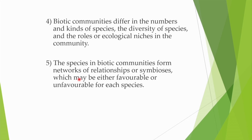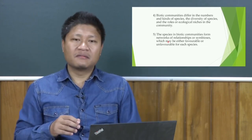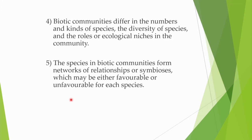In the fourth point, these biotic communities differ in numbers and kinds of species, the diversities of species, and the roles of ecological needs in the community. The geographical locations or habitations or environment thus have some kind of influence on the species — that is, the particular ecological needs where the biotic inhabits. In the fifth point, species in biotic communities form some kind of a network of relationships or symbiosis, which may be either favorable or unfavorable for each species.